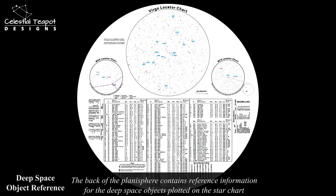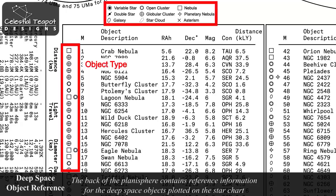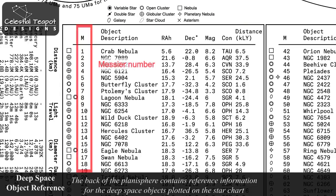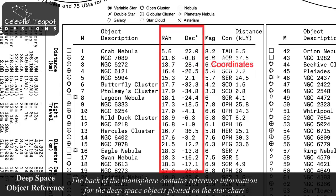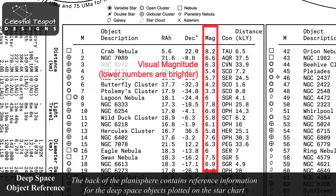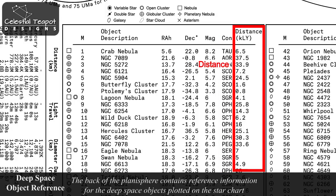The back of the planisphere also contains reference information for deep space objects plotted on the star chart. It includes a symbol showing the type of each object, as well as the Messier or NGC catalog number. The common name or description of each object is also shown in the table, along with the polar coordinates — including right ascension in hours and declination. The table also shows the visual magnitude or brightness of each object: smaller numbers are brighter, larger numbers are dimmer. The constellation and distance to each object in thousands of light years are also shown.